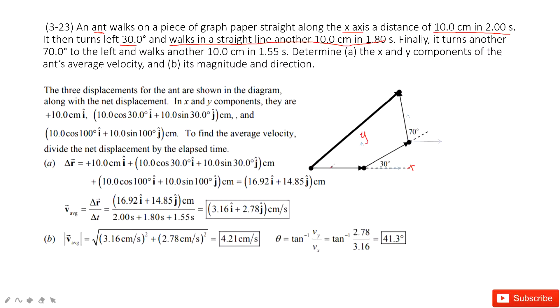The first vector is 10 cm in x-direction, so very easy, 10i. The second vector we need to project into the x-component and y-component. The x-component is 10 times cosine theta.